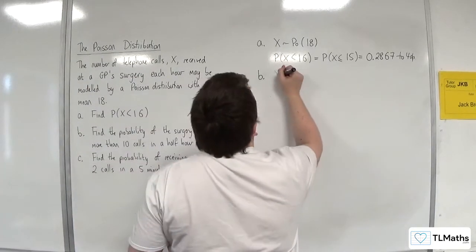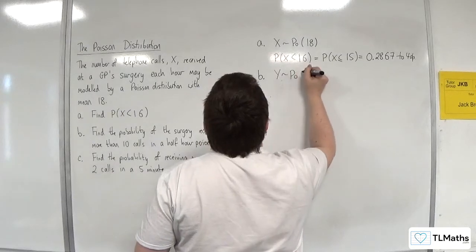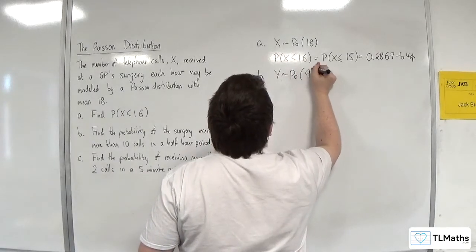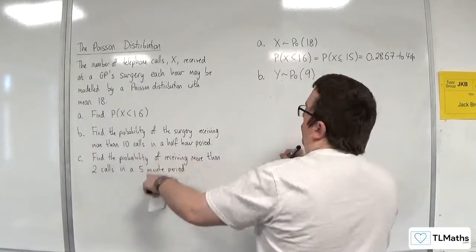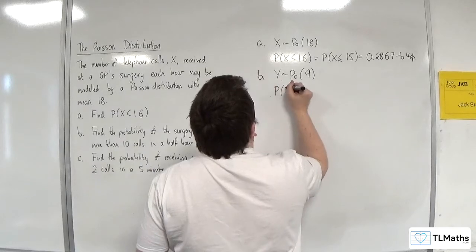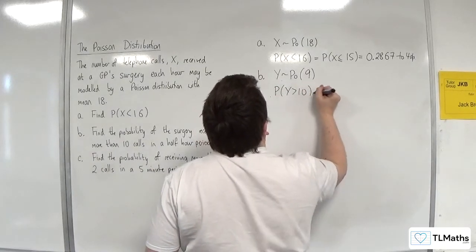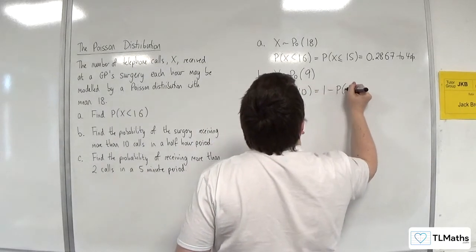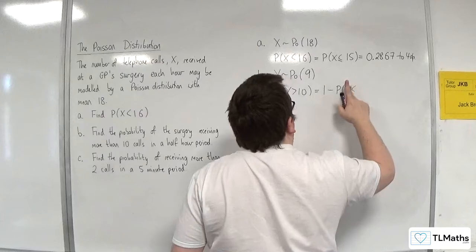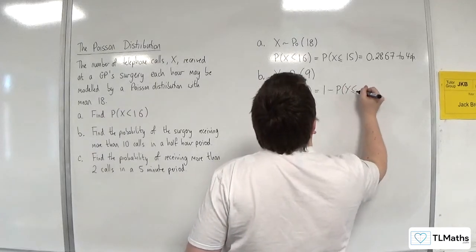So we would now be working, let's call it Y, a Poisson distribution with a mean of 9. We want more than 10 calls, so greater than 10 is 1 take away less than or equal to, Y is less than or equal to 10.